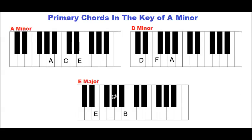The first primary chord is A minor, the second is D minor, and the third is an E major chord. The primary chords in the key of A minor are A minor, D minor, and E major.